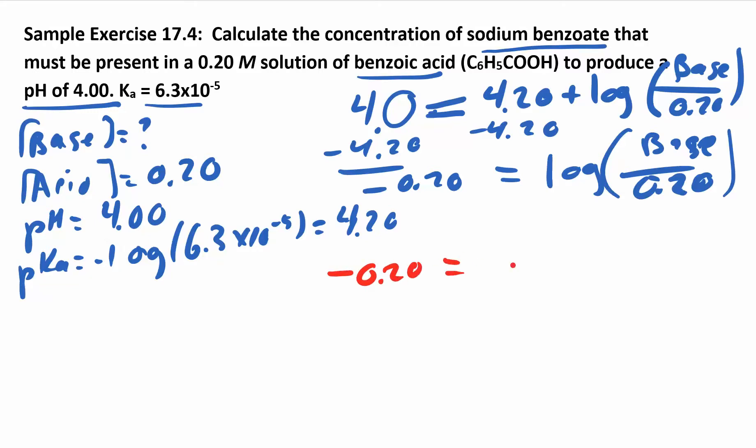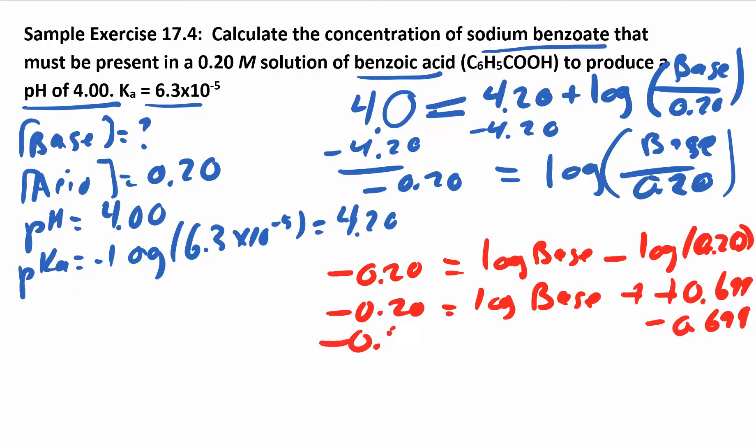So I have negative 0.20 is the log of the base minus the log of 0.2. So when you have the log of x over y, that's the same as the log of x minus the log of y. Just using some log rules. All right, so we can do that. So we have negative 0.20 is the log of the base, and this right here ends up being minus a negative 0.699. So now I can subtract out that 0.699, and I get negative 0.889 is the log of the base concentration. And to undo that log base 10, 10 to the log of the base just gives me the base concentration. And 10 to the negative 8.99 is 0.13 molar.